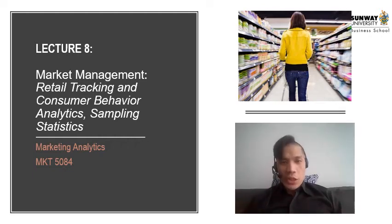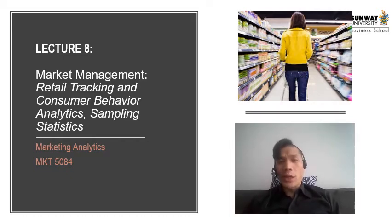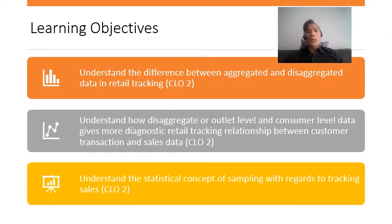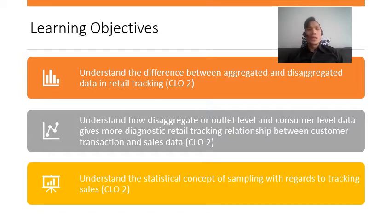This is Lecture 8 of Marketing Analytics. We are going to explore Marketing Management's Retail Tracking and Consumer Behavior Analytics and look at how sampling statistics can be used to track retail tracking in purchases of our consumers. For this lecture, we hope to understand the difference between aggregated and disaggregated data in retail tracking, and how disaggregated or outlet-level or consumer-level data gives more diagnostic retail tracking relationships between customer transactions and sales data. We also hope to understand the statistical concept of sampling with regards to consumer and transaction sales.